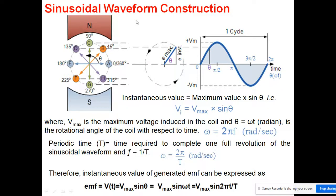I am taking two parts here: one is the rotation of a conductor in a stationary magnetic field, as shown in the last slide, and when it is rotating, we want to see how the induced EMF is varying. This variation will give us the sinusoidal waveform which represents our AC.